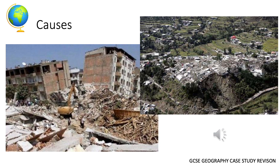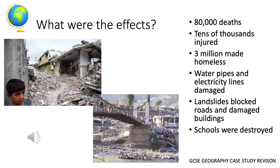The Kashmir earthquake reached 7.6 on the Richter scale and caused large amounts of damage. There were many social effects as a result: 80,000 people died and tens of thousands more were injured. Three million people were made homeless as a result of buildings and homes collapsing.